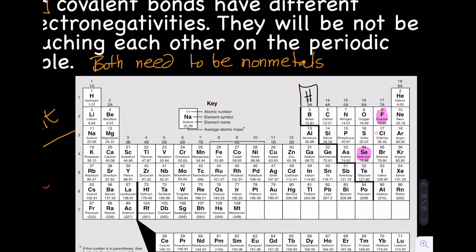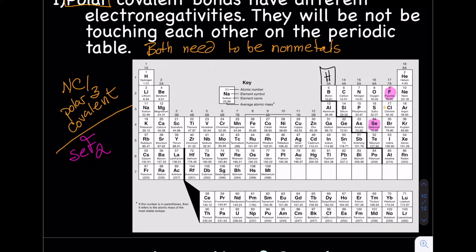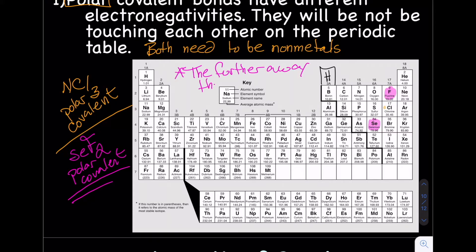Another example: SE — selenium — is here and F — fluorine — is here. They're both non-metals but they're not touching each other on the periodic table, so this is also polar covalent. Something important that we'll come back to later in the unit: the further away the atoms are from each other on the periodic table, the more polar they are.